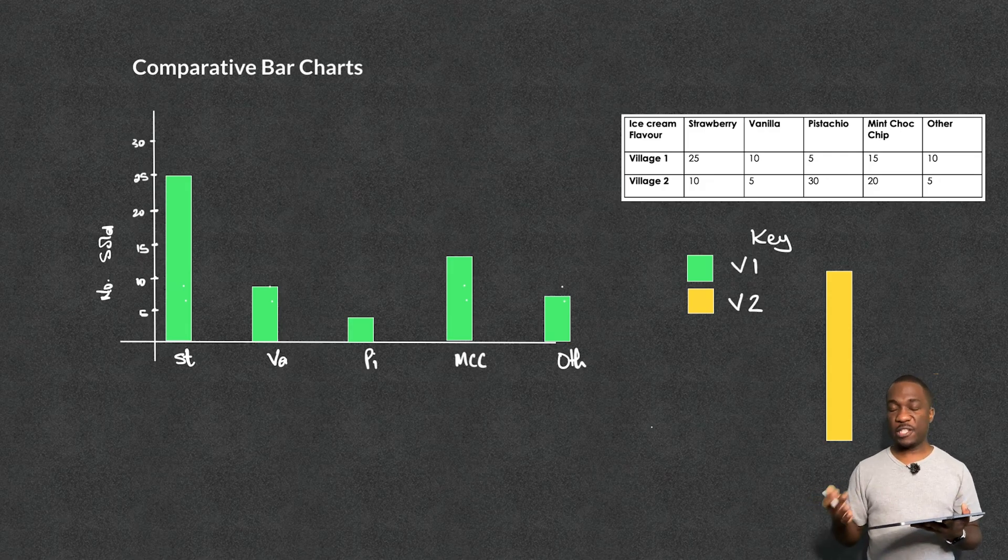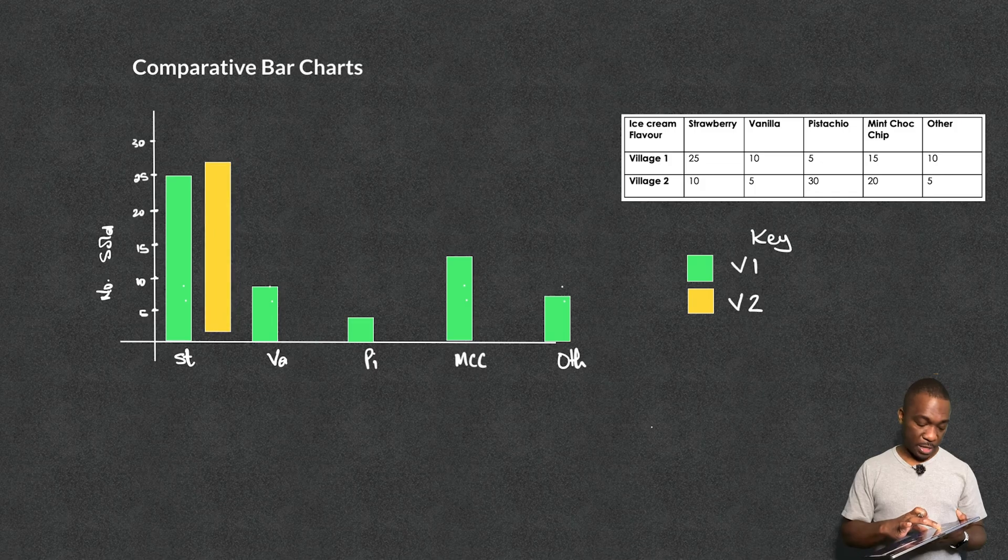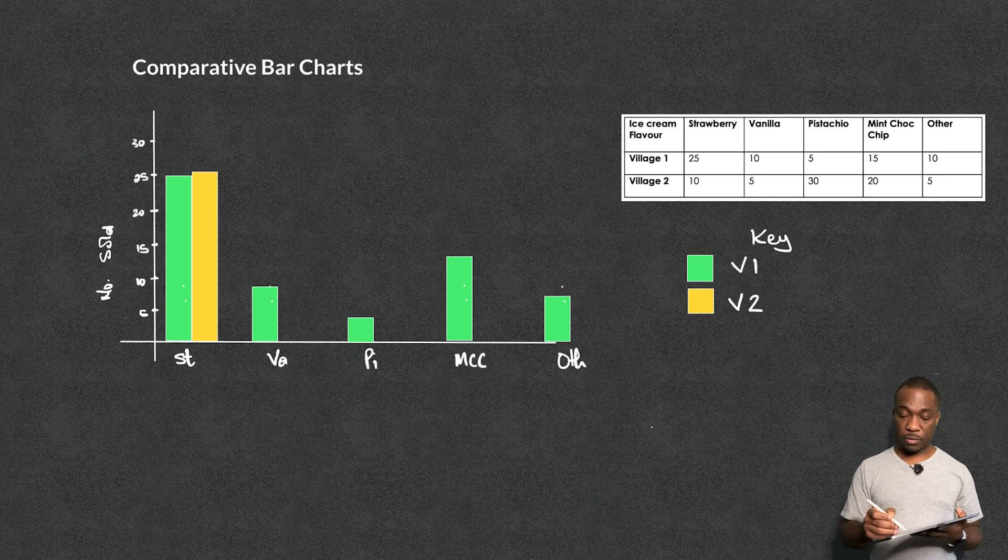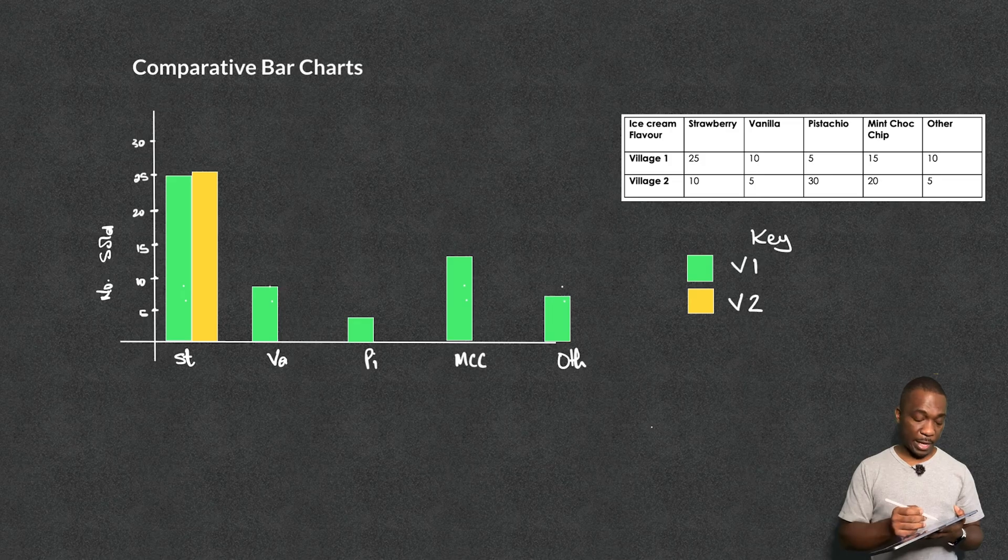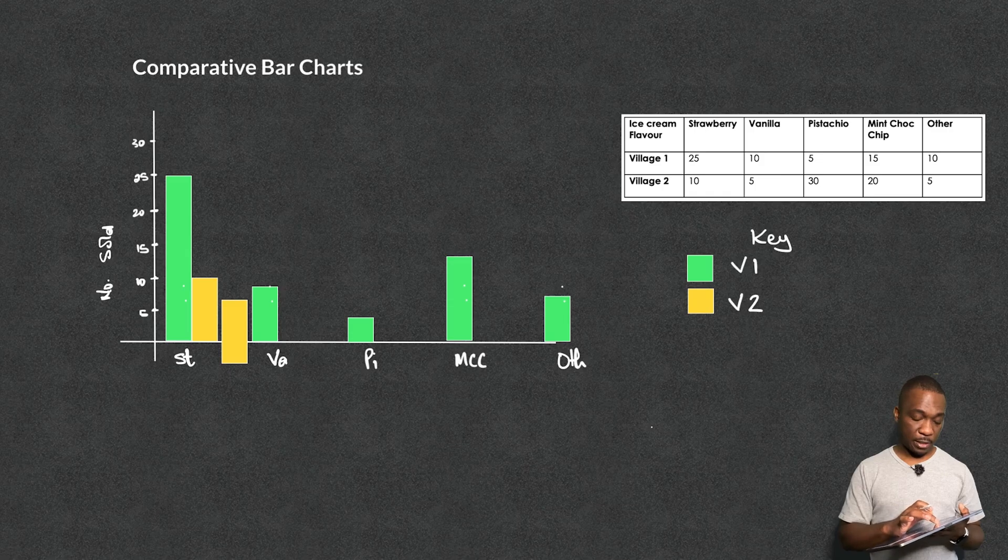So now I need to plot what my sales were like in village two. And so for this one, I now need to move this over here, and this time it's going to be touching that bar. And the first one, it only goes to 10 for village two. So not very many people actually really like this one. So that's going to go for 10.